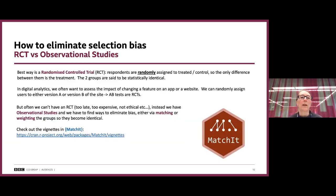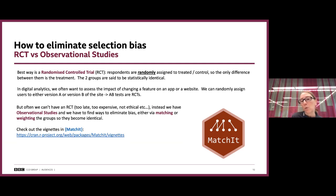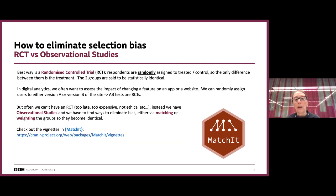So how do we eliminate this selection bias? The best way is through an RCT — a randomised control trial — where people are randomly assigned to the treated or the control group, so the only difference between the two groups is the treatment. Before the treatment, these two groups are statistically identical. In digital analytics, we can randomly assign people to either version A or version B of a site and compare results — this is an RCT, and we call it an A/B test.